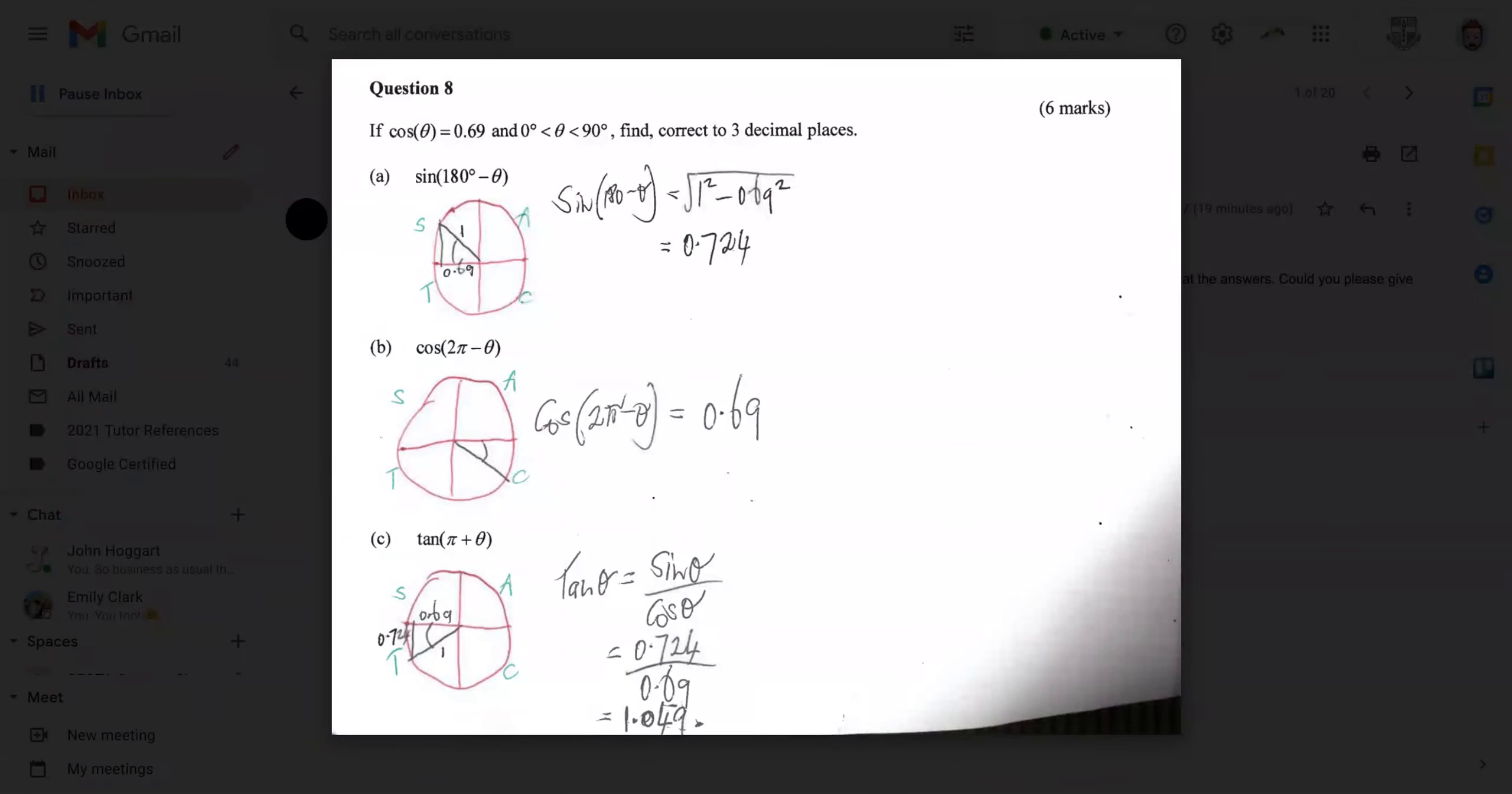Now there is a trig identity called the Pythagorean trig identity. It's sine squared plus cos squared equals 1. And so you can see this thing here is a rearrangement of it. So we've got 1 squared minus cos of theta, which is 0.69 squared, would give us sine squared. And then they've square rooted it to get sine.